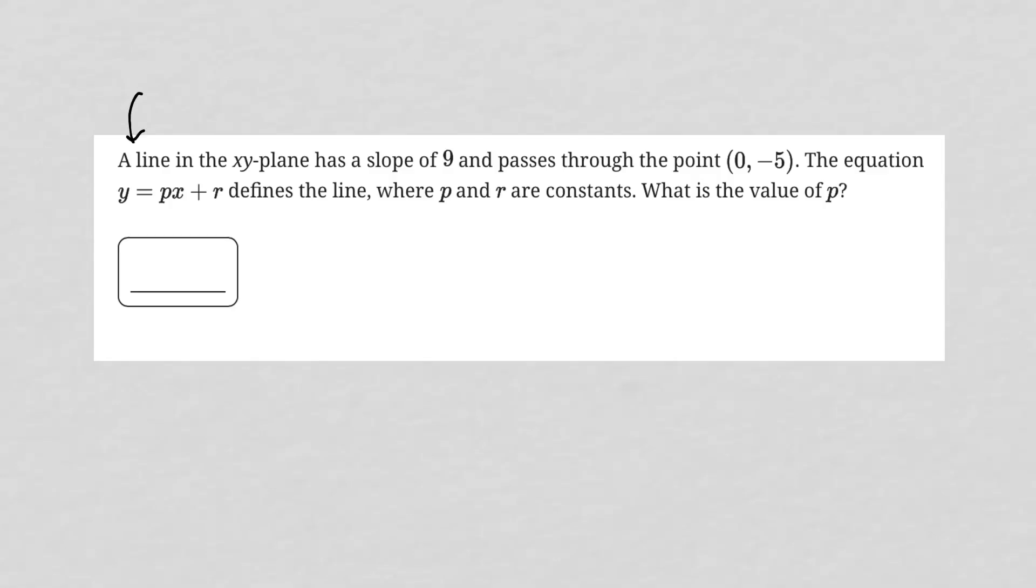So this question says a line in the xy plane has a slope of 9. Anytime I see the wording line in an xy plane, even just line, I'm always thinking y equals mx plus b to start, where m is the slope and b is the y-intercept. So far this question is telling me that my slope is 9, so m equals 9.